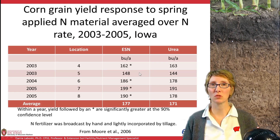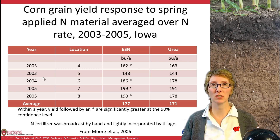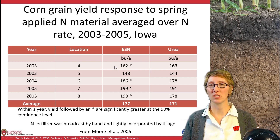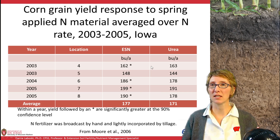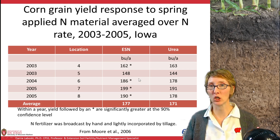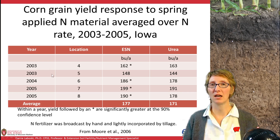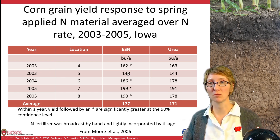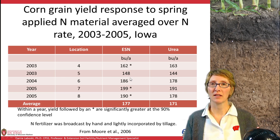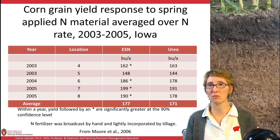Another study, again on more silt loam soils, looked at spring-applied ESN or urea across a few different locations over three years. At one location, ESN actually did a little bit worse than urea. At three other locations, significantly better yield was seen with ESN compared to urea. At another location there wasn't statistical significance, but ESN was better. This shows that ESN applied pre-plant can be a useful material on silt loam soils, as it slowly releases N and keeps it from being lost.